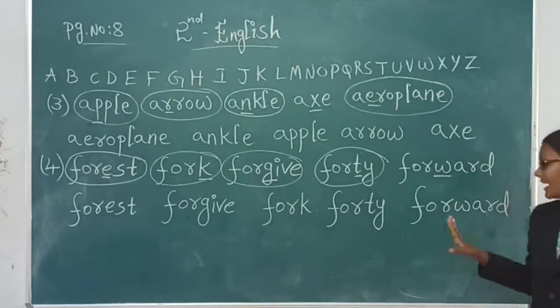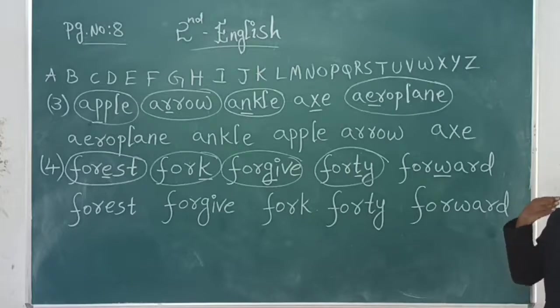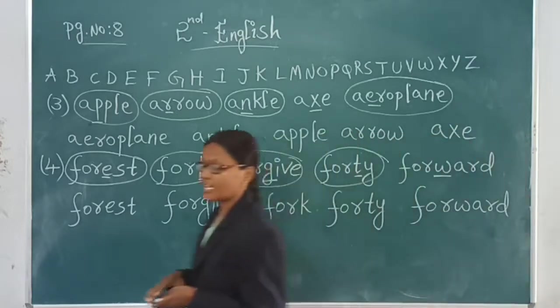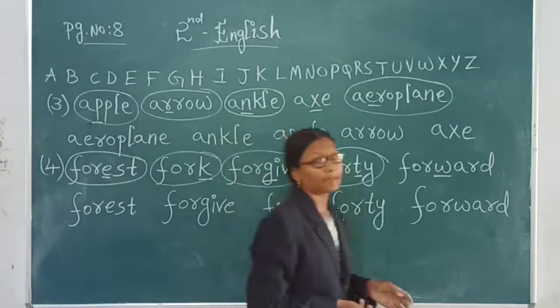Like this we have to frame. See in each and every one, first one if you are seeing, if first letters are same, we have to go for second letter. If first and second letters are same, we have to go for third letter. First, second, and third letters are same, we have to go for the fourth letter. Like this we have to do the arrangement. Arrangement of alphabets in dictionary. Arrangement of alphabets in dictionary form.